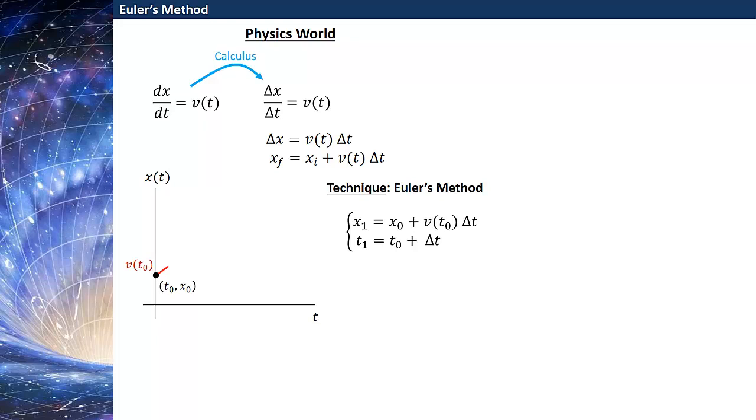So this is the technique of Euler's method. I imagine that I start at some initial point t0 and x0 and I know what the slope or the function is there, v(t) at that initial condition.